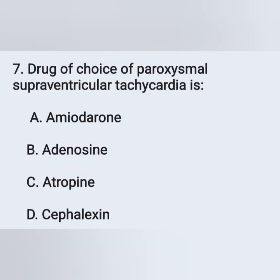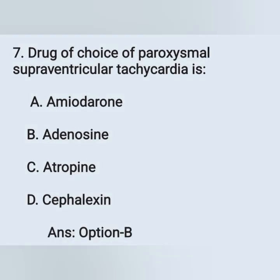Next question: drug of choice for paroxysmal supraventricular tachycardia is — option A: amiodarone, option B: adenosine, option C: atropine, option D: cephalexin. The drug of choice for paroxysmal supraventricular tachycardia is adenosine — option B is the correct answer.